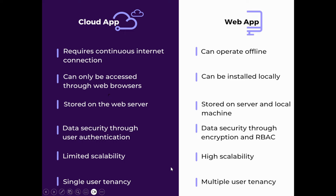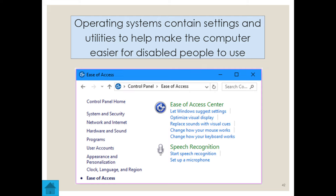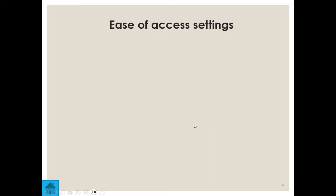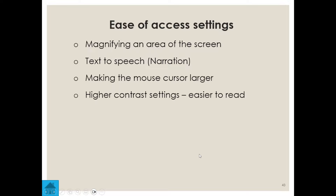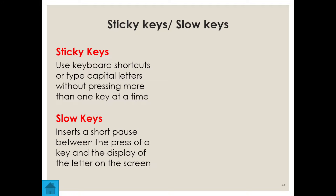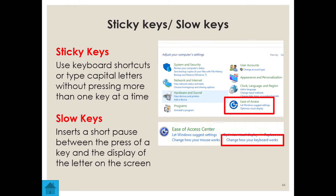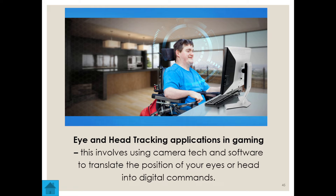Operating systems contain settings and utilities to help make the computer easier for disabled people to use. In Control Panel under Ease of Access, you can magnify an area of the screen, use text to speech, make the mouse cursor larger, use sticky keys to type capital letters without pressing more than one key at a time, and use slow keys to insert a short pause between pressing a key and the letter appearing on screen.